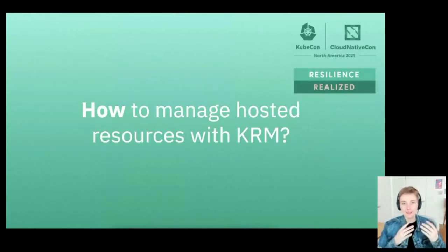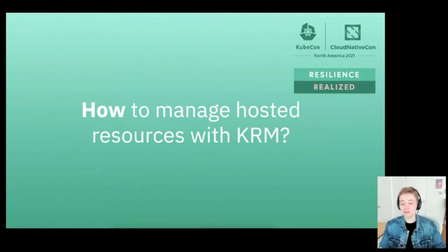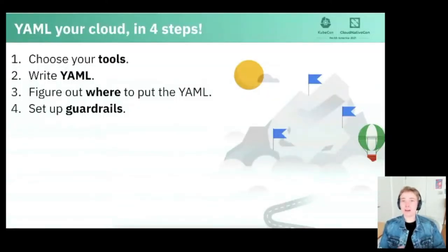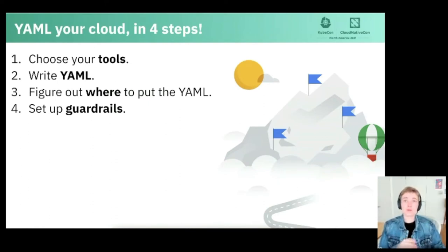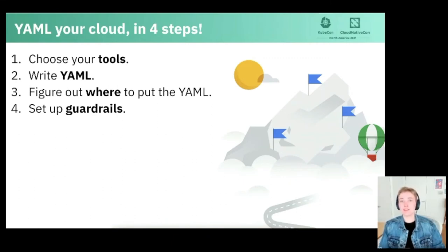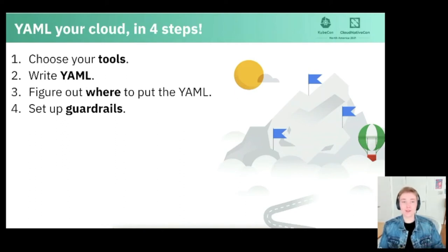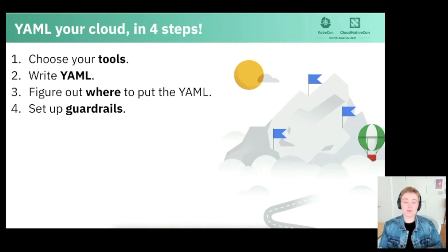Now that we've covered what the Kubernetes Resource Model is and why you might want to manage your hosted resources with it, we're going to walk through a couple of demos. There's a general workflow that applies to most cloud providers: first, figure out how you're going to manage your hosted resources using first-party or third-party open source tools; second, write your KRM YAML resources representing those hosted cloud infrastructure; third, figure out where to put the YAML files in Git and the workflow for getting those files onto clusters; and finally, set up guardrails and authentication to make it more secure.